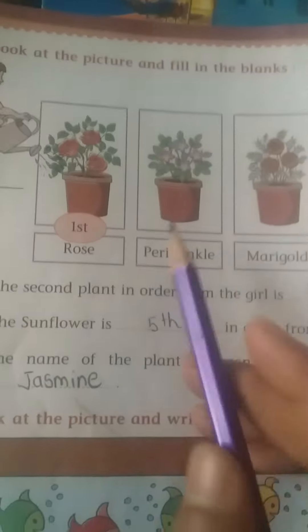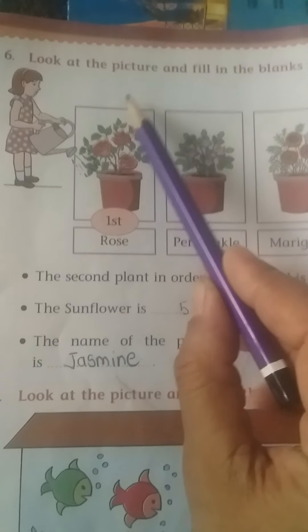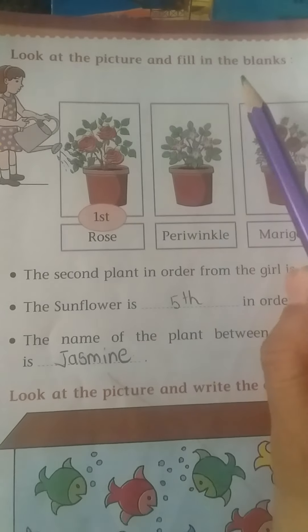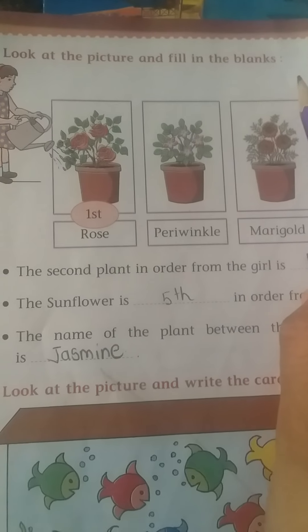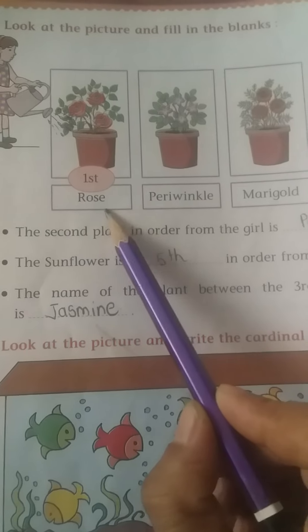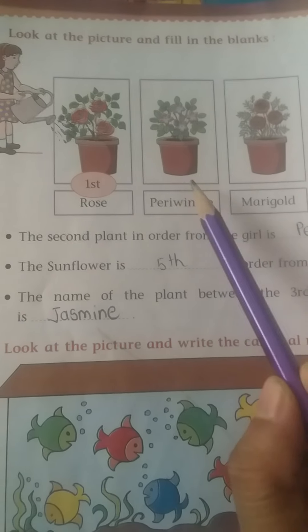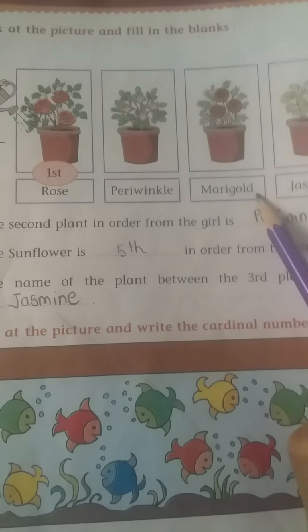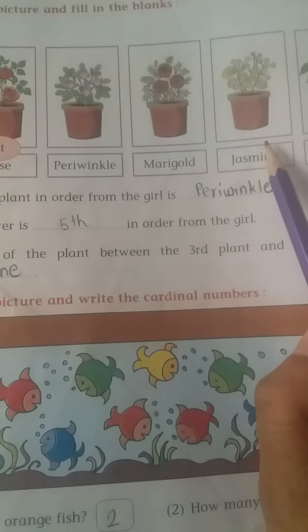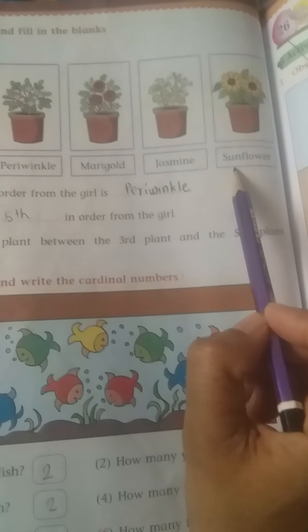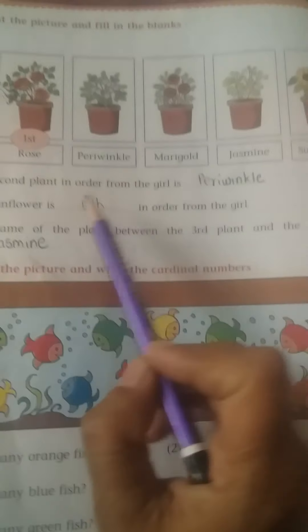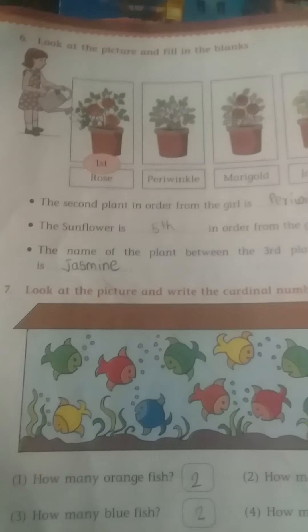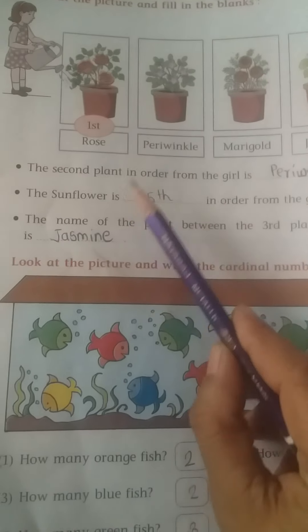Page number 74 we are going to solve. Look at the picture and fill in the blanks. Children, here there is a rose plant, then periwinkle, then marigold, then jasmine, and then sunflower. The first question is: the second plant in order from the girl is —